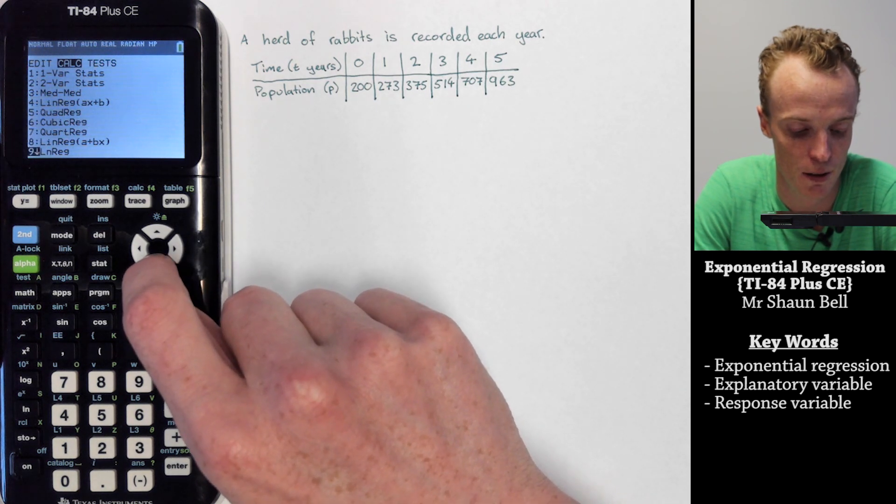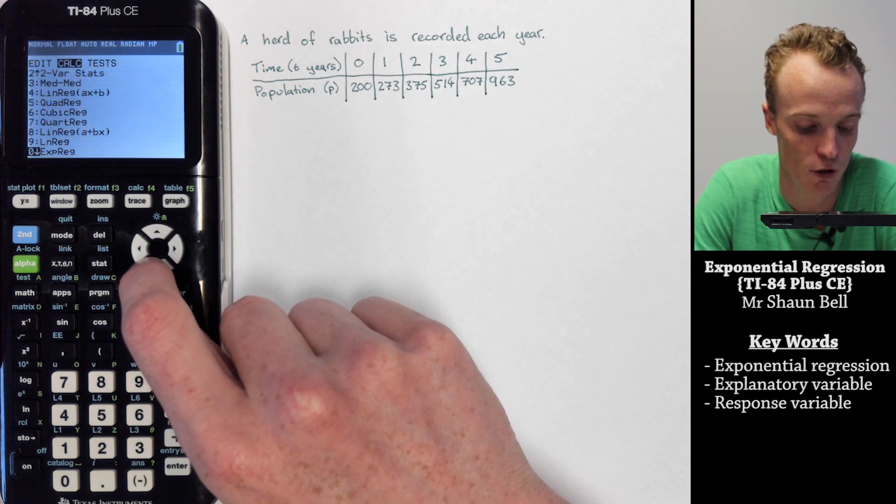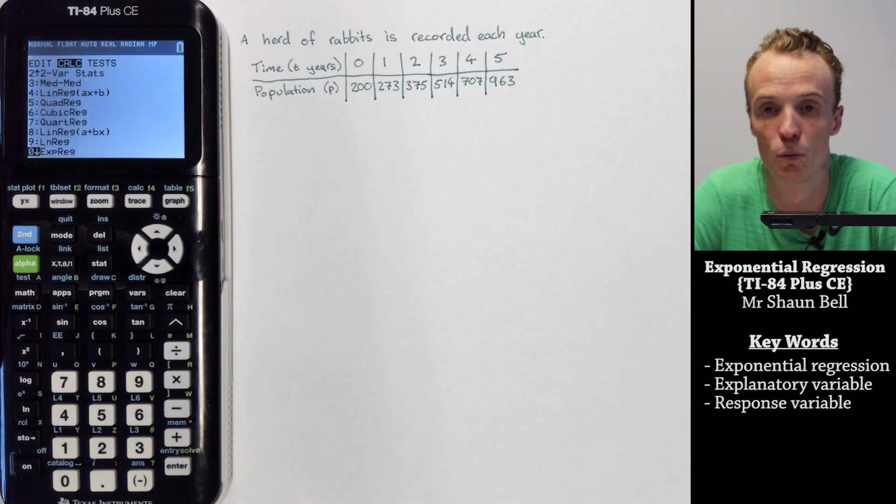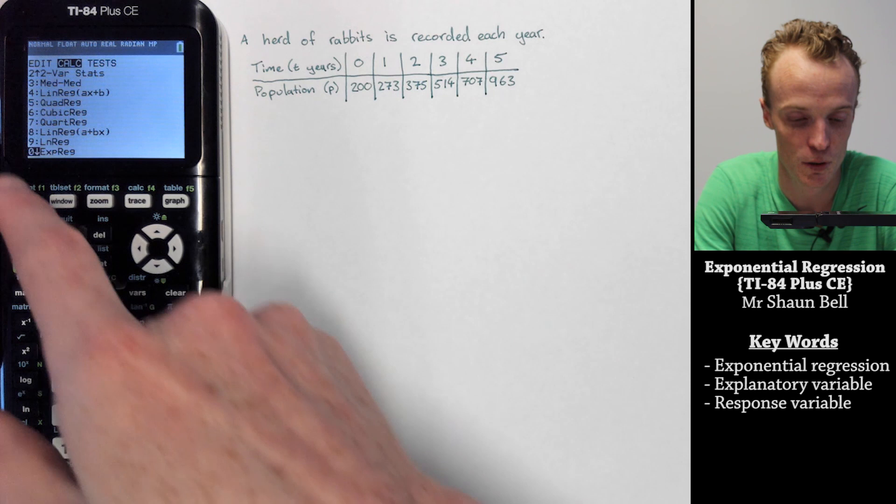If you scroll down until you go just off the page, you'll see this EXPREG which stands for exponential regression. That's also option 0.